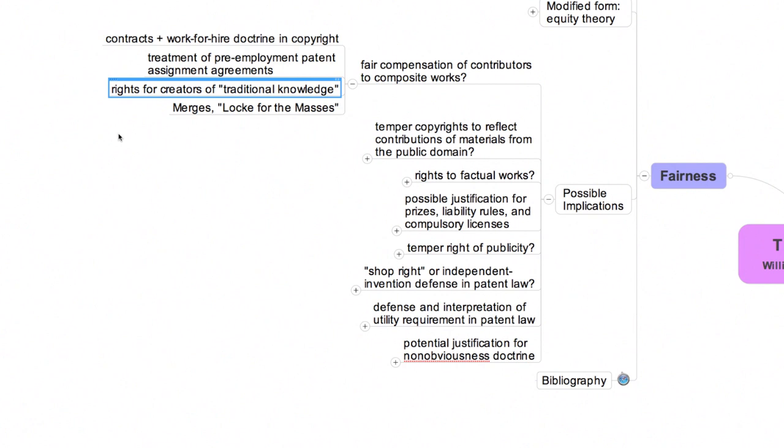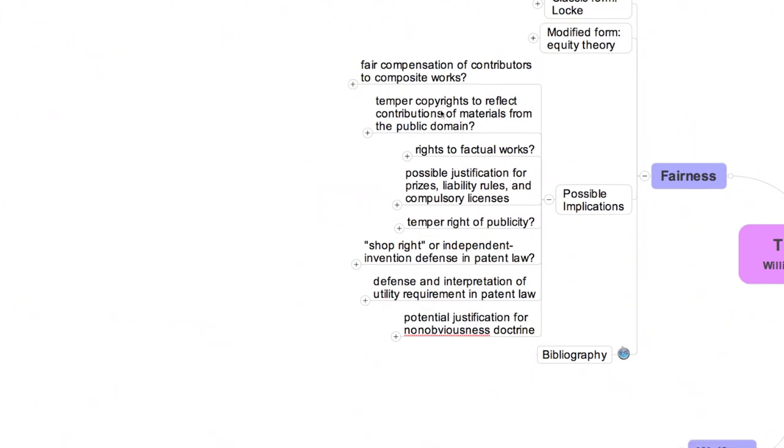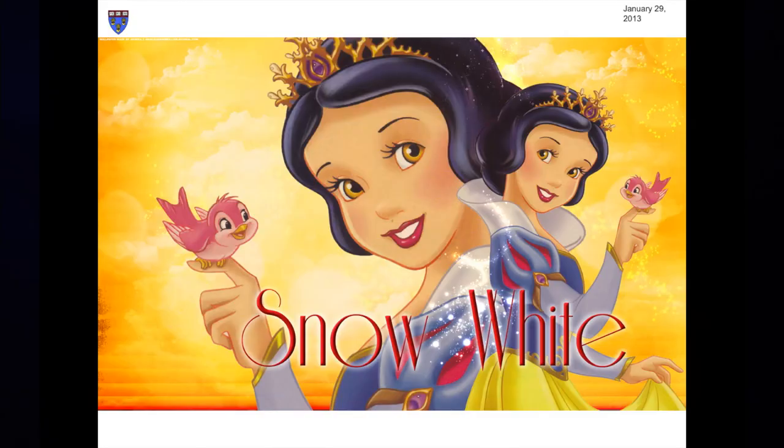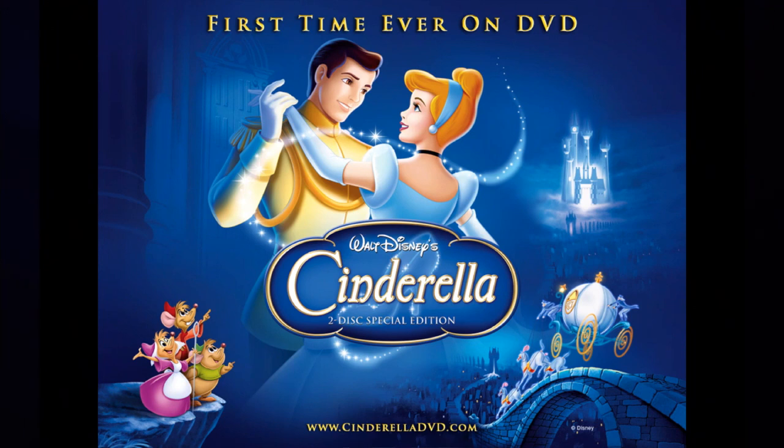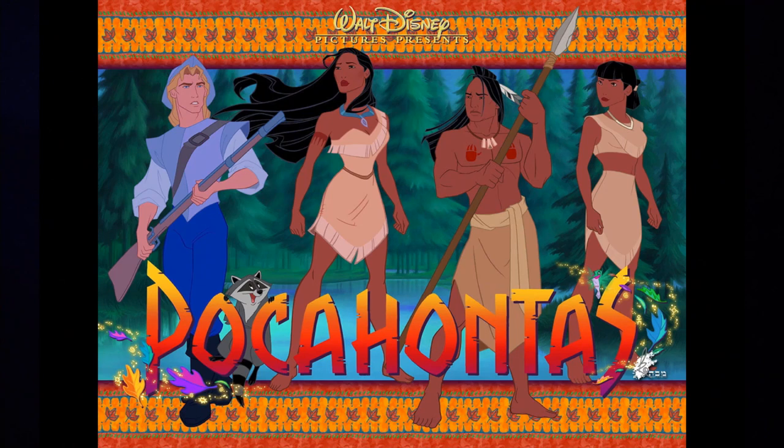The issue of proportionality will also come up frequently in this course. Here's just one context. The value of many copyrighted works derives in part from the labor of the copyright owner, but also in part from materials taken from the public domain. Classic examples include Disney's animated versions of folk tales, such as Snow White, or Cinderella, or historical narratives, such as Pocahontas. Should the scope of Disney's copyrights in such adaptations of traditional materials be smaller than the scope of copyrights in films incorporating more original plots? The kinds of considerations that Lockean scholars attend to suggest that the answer is yes, but it's hard to determine how exactly one would implement that guideline.